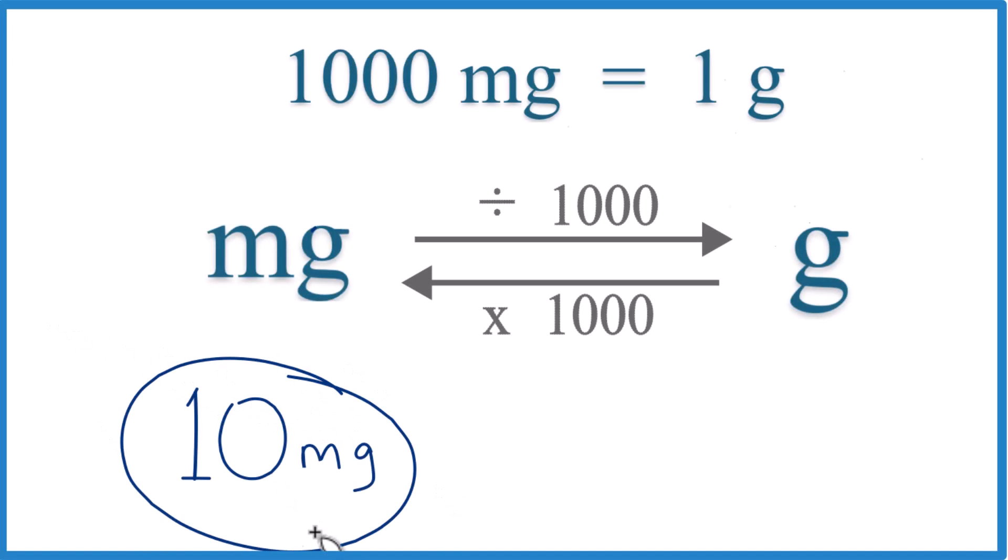So if you're given 10 milligrams and you want to get that to grams, here's how you do it. There are 1,000 milligrams in one gram. So we can say one gram equals 1,000 milligrams.